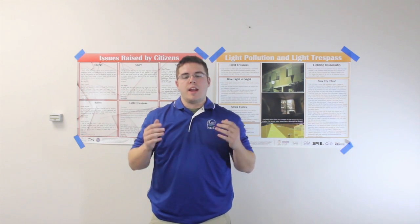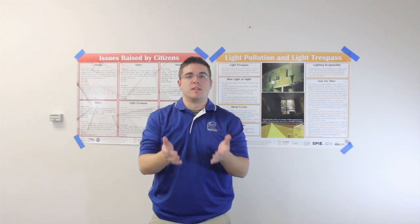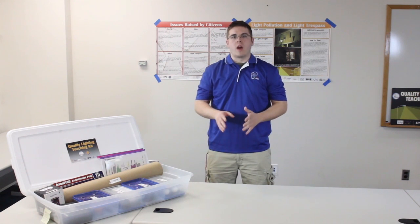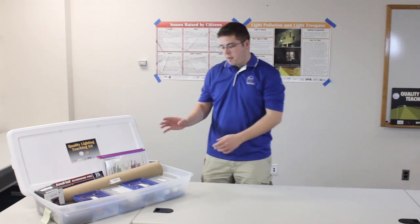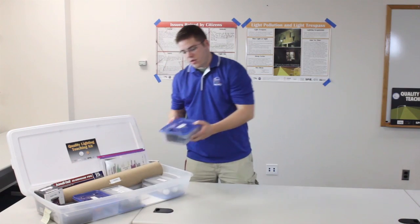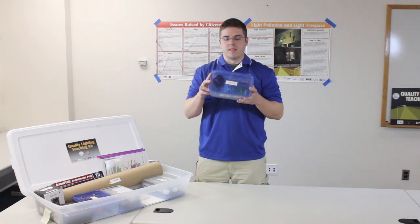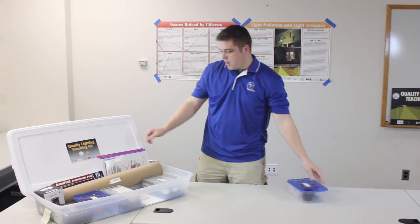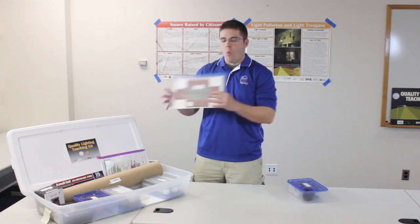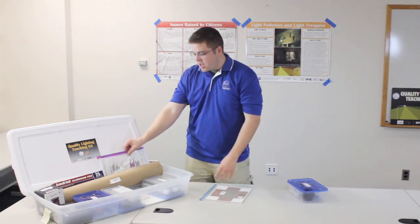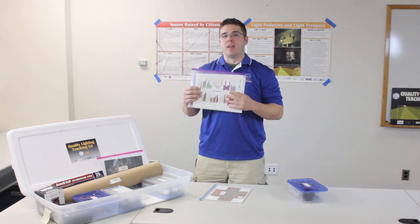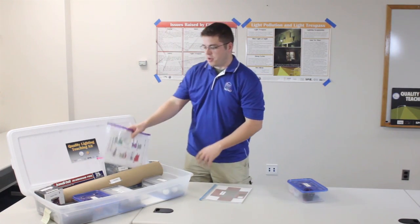Now we're going to look at how we set up this activity. In the quality lighting teaching kit, the main kit, you're going to have your light trespass ziplock container and one light trespass envelope. If need be, there's an instructor's guide and a kit inventory that lists everything that should be in this activity.